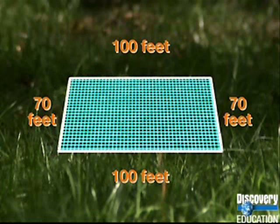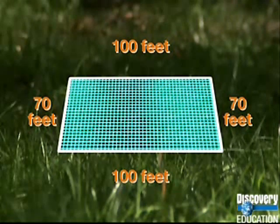If we counted each individual one-foot square unit within the enclosed space, it would be the same number: seven thousand.